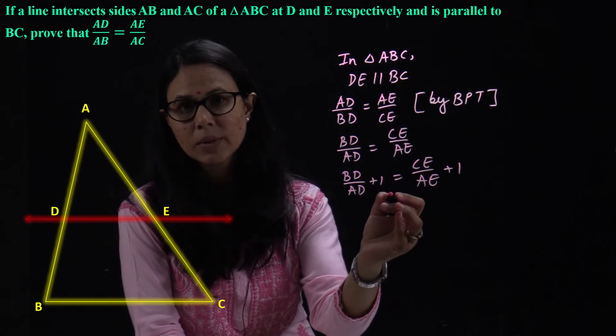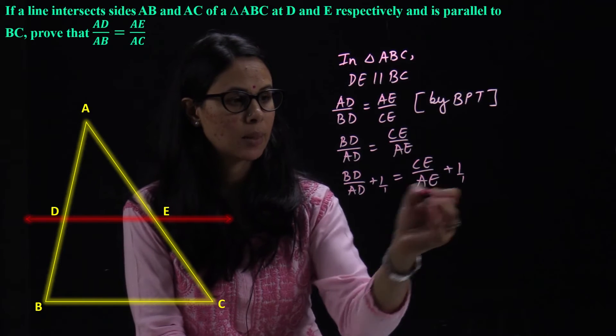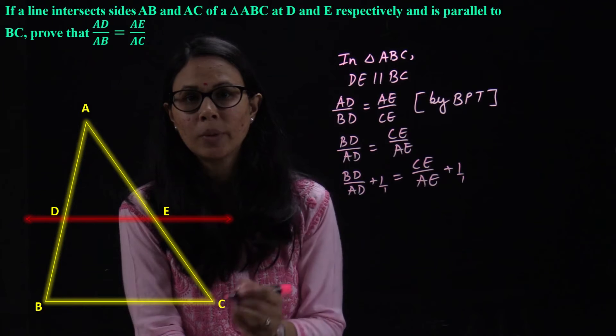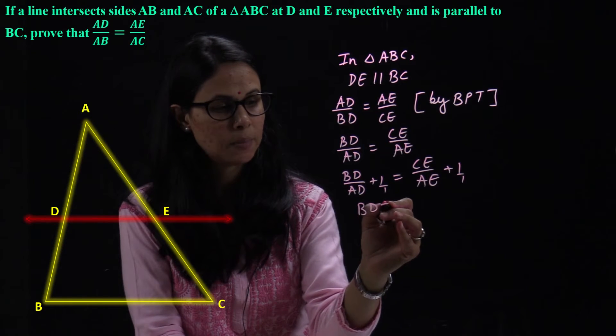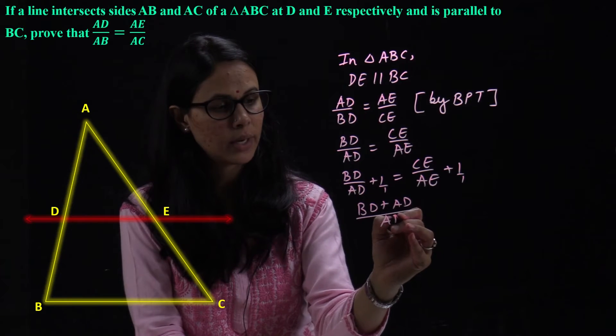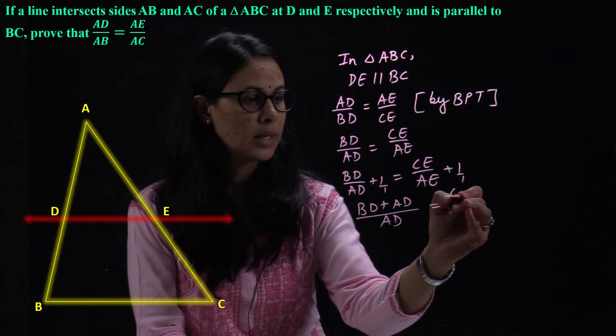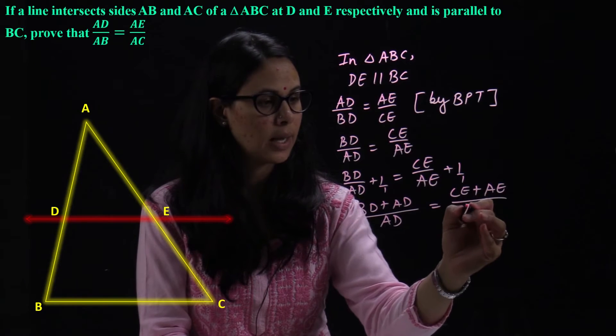If we have this fraction we can solve. So, what happens? This upon one is 1. In denominator AD, then this will be BD plus AD upon denominator AD. This is equal to CE plus AE and both denominator AE.